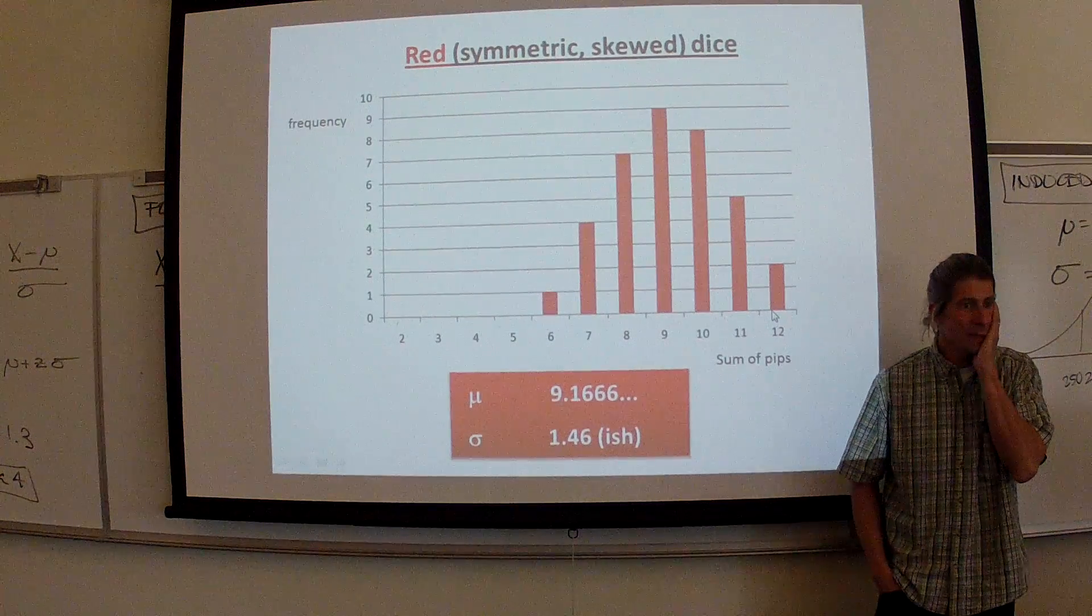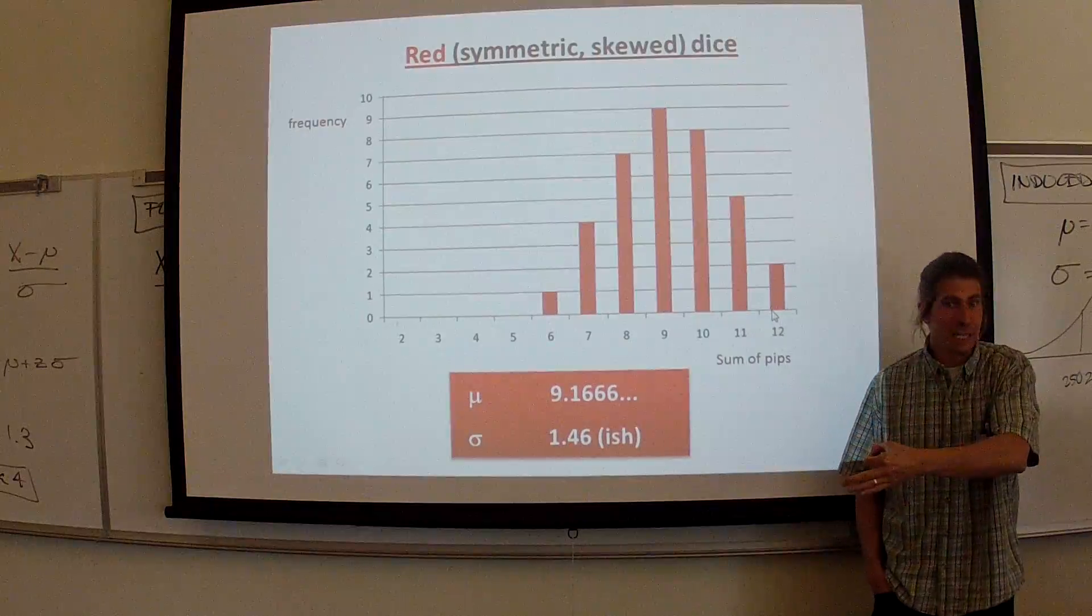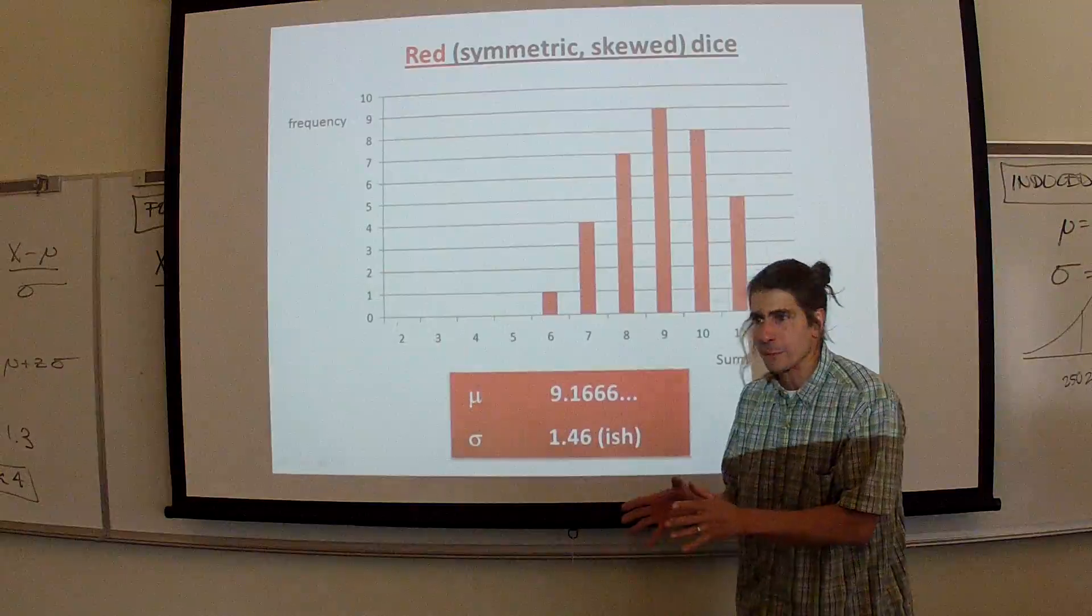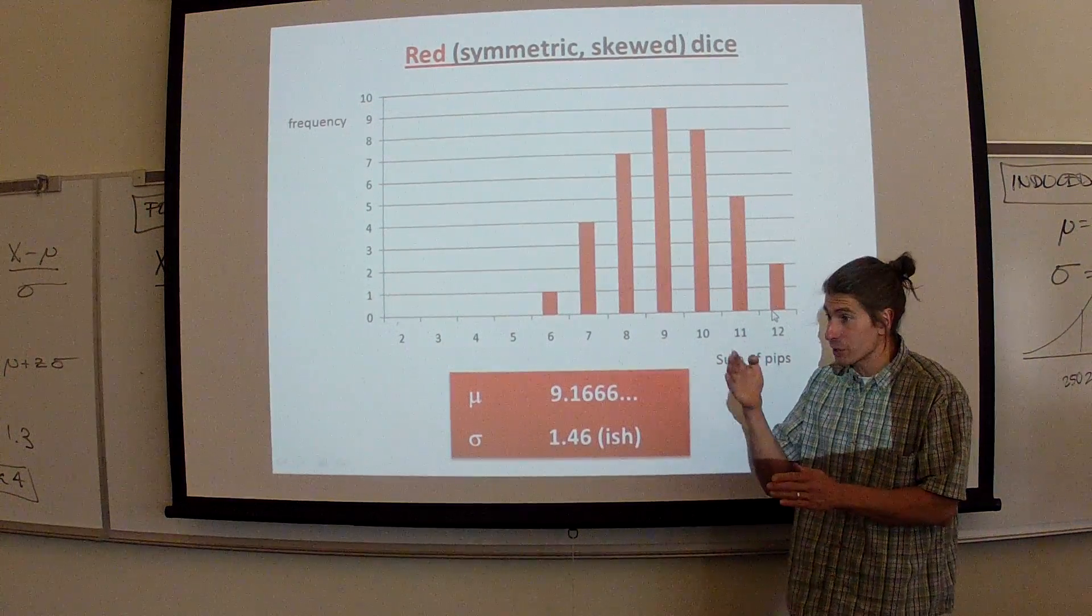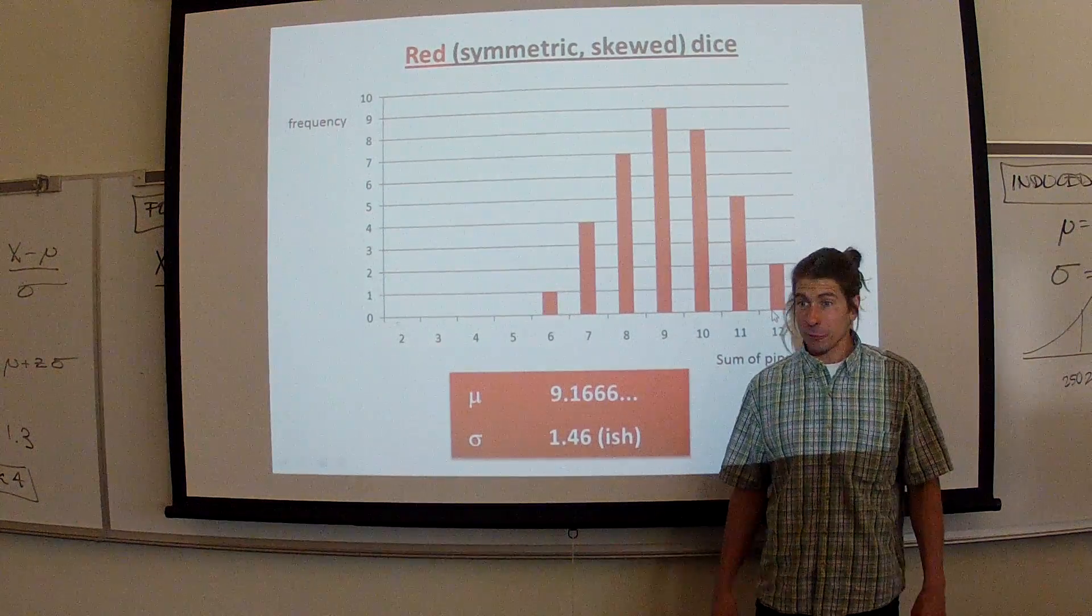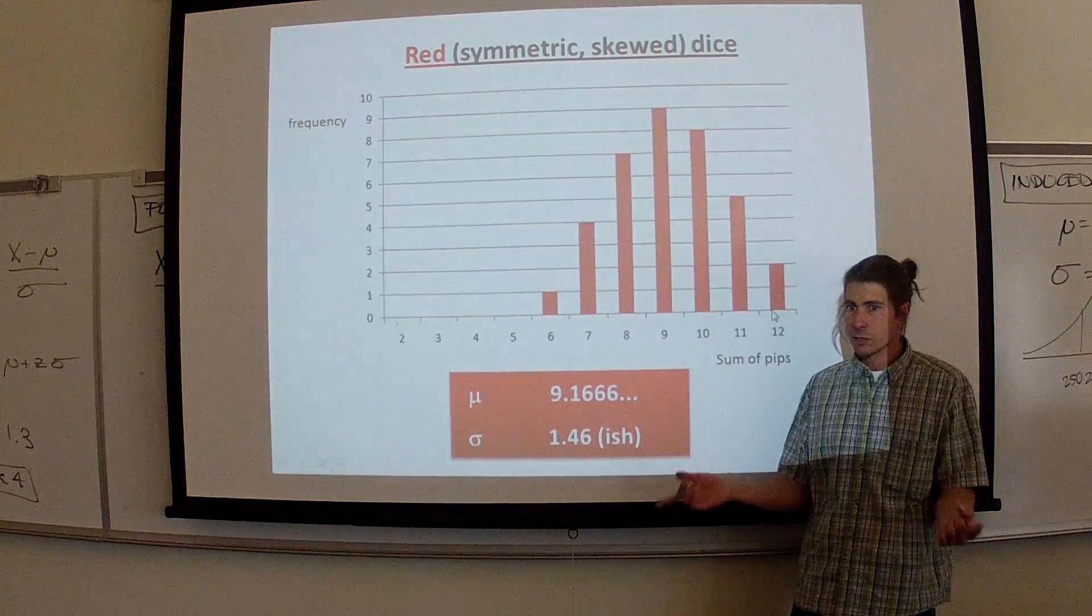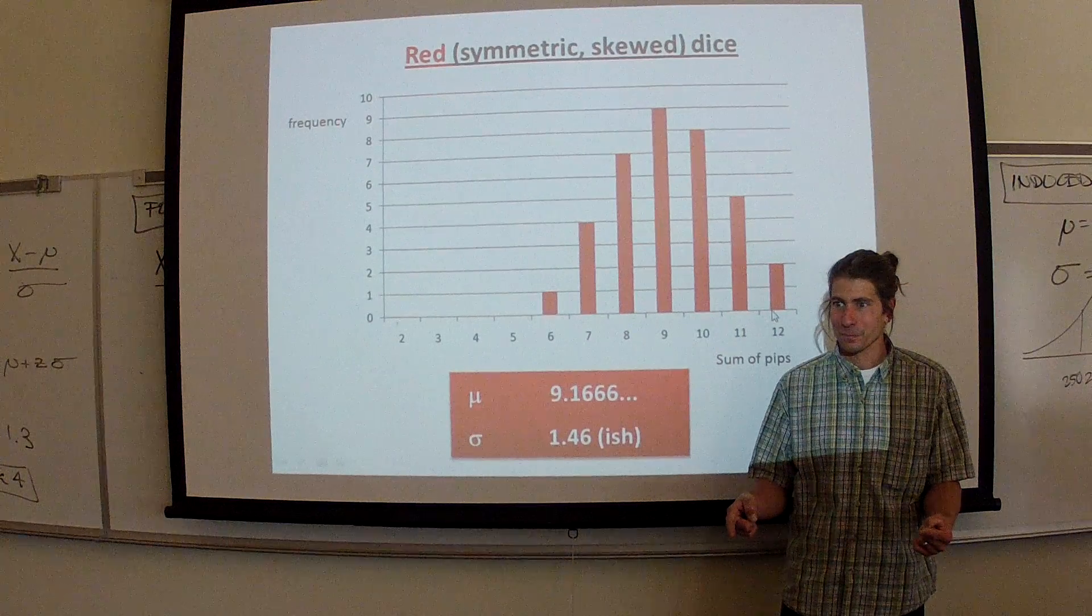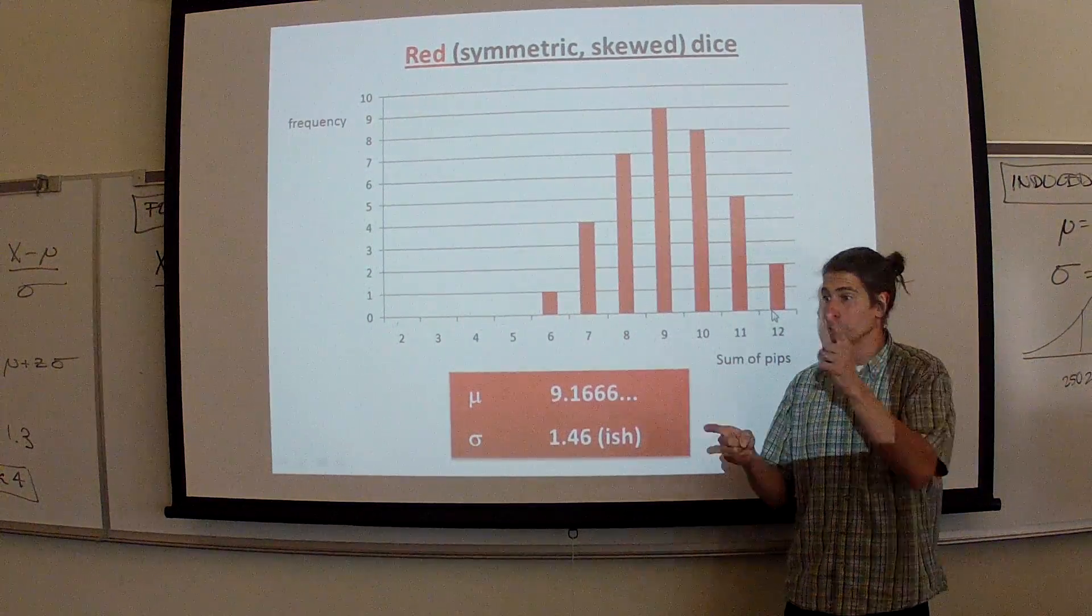Suppose we're interested in the average attention span increase of an ADHD kid on Adderall versus an ADHD kid on Ritalin. And more purposes, maybe we're interested in the average attention span increase on different dosages of Adderall and Ritalin. Well, how are you going to count that? Are you going to go and measure every single kid's attention span that's on Adderall and Ritalin or in a control group? You can't, right? So what do you do to get the idea? What do you take? You take a sample from the population.